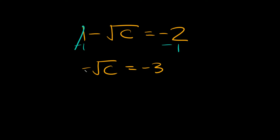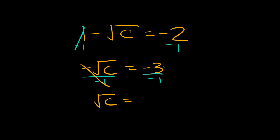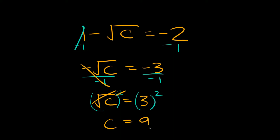Now to get rid of this negative symbol all we need to do is divide this side by negative 1, and what we do to one side we do to the other. Those cancel out so we're just left with the square root of c is equal to negative 3 divided by negative 1, which is positive 3. So we can square both sides — those cancel out — and we're left with c is equal to 3 squared, which is 9.